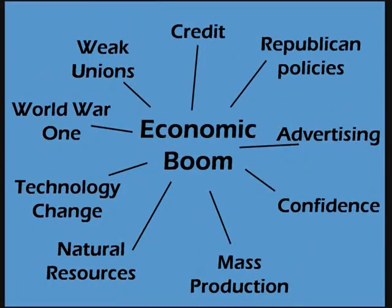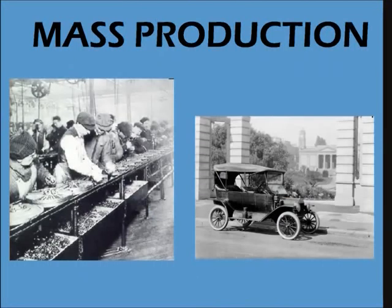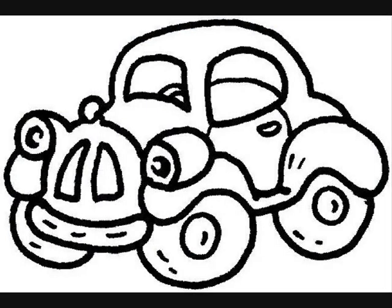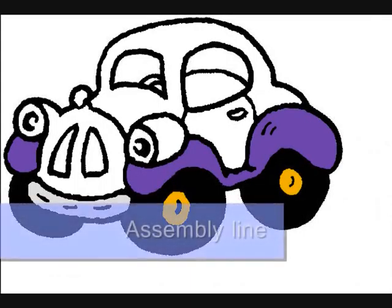Republican policies are one of the more in-depth factors. Some of the others do not require as much detail, but they all can be explained with examples. Let's try another factor: mass production. Mass production very simply means the production of large amounts of standardised products. This is best explained through the assembly line.